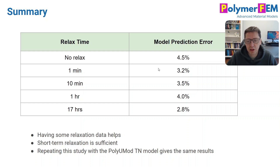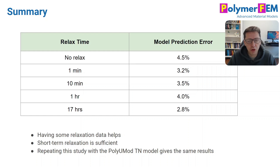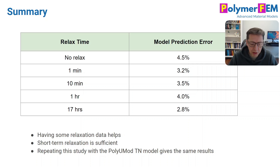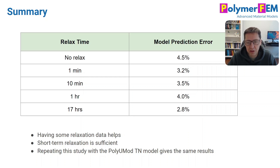I also repeated this study using a different material model — the TN model, a three-network model, which is a little bit less accurate — and the same conclusions held. I report that in my blog article. I would run these experiments to relatively short times. There are circumstances when you want to run stress relaxation or creep to much longer times if you're particularly interested in certain failure events, but most of the time that's not necessary. If you have any questions, you can ask them below.